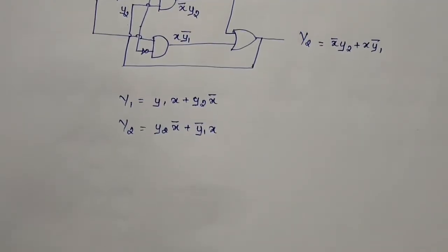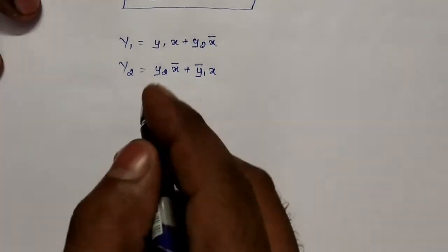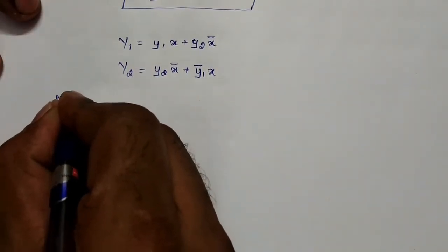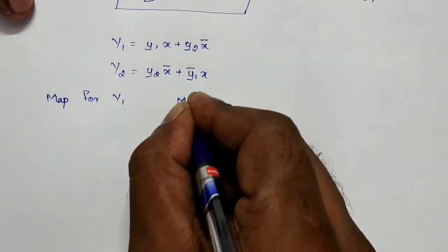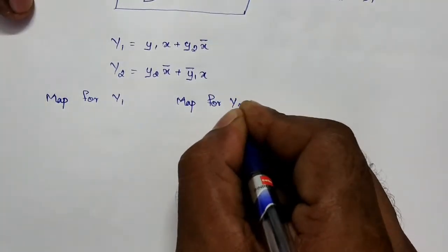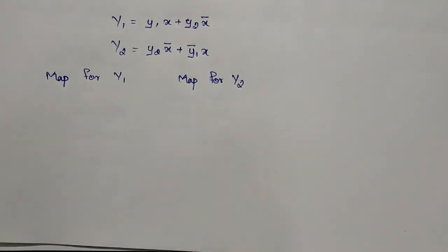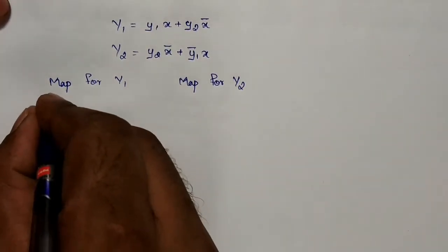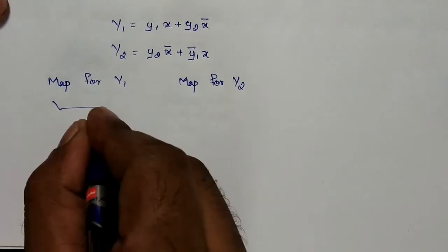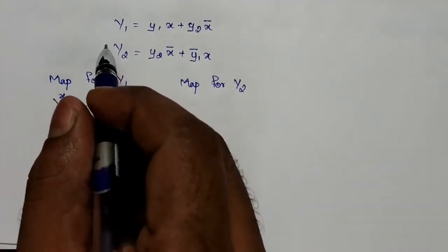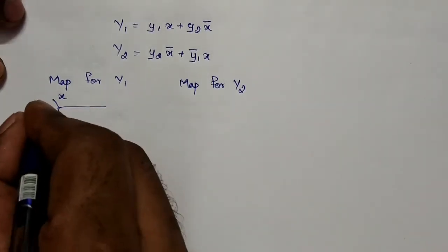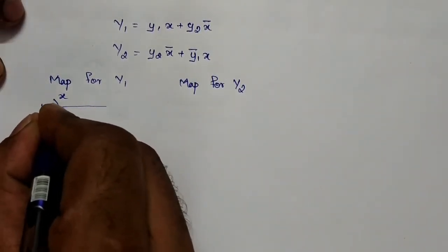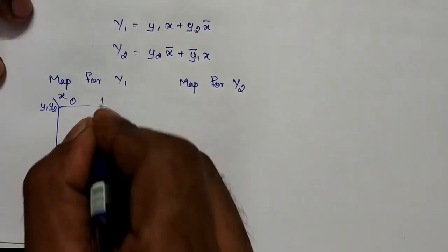We need to go for finding the map for Y1 and the map for Y2. This can be derived using the inverse K-map form. In the map, on the horizontal axis we will have the input x, and on the vertical axis we need the present state. We are having two present state variables y1 and y2, so the possibilities are 00, 01, 11, 10.